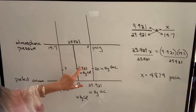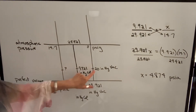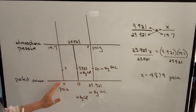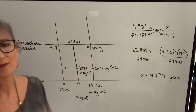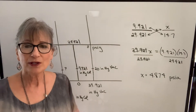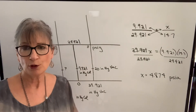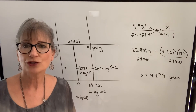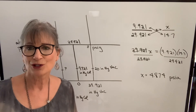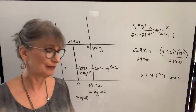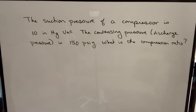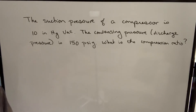That method works whenever you have a vacuum pressure and need to change it to PSIA: take the intermediate step of changing to inches mercury column, then use proportion to find PSIA. Now that we know how to convert both gauge pressure and inches mercury vacuum to PSIA, we can calculate compression ratio. Here's an example: the suction pressure of a compressor is 10 inches mercury vacuum, and the discharge pressure is 150 PSIG. What is the compression ratio?